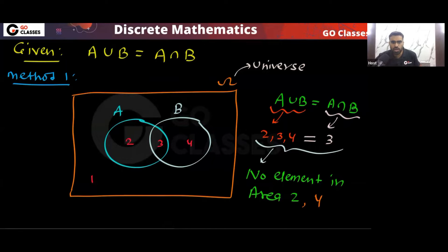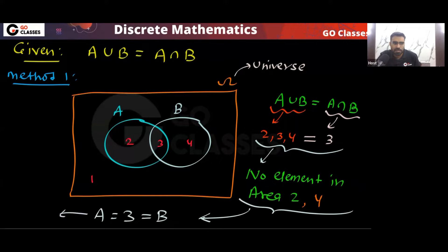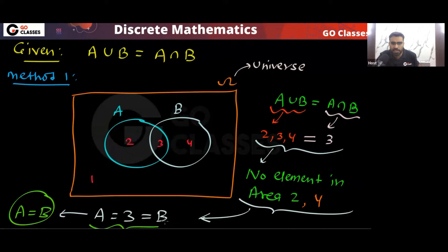If there is no element in area two and no element in area four, then set A is equal to area three only, and set B is equal to area three only. This area is empty, so set A and set B are basically both just area number three. Therefore, A is equal to B.